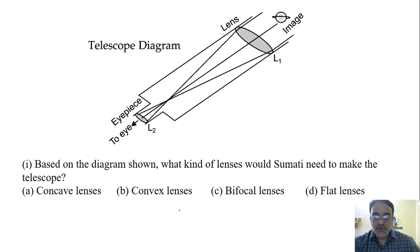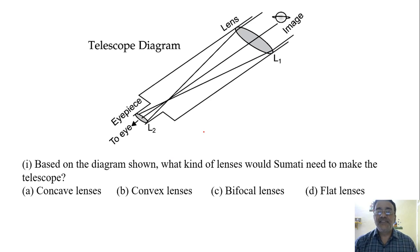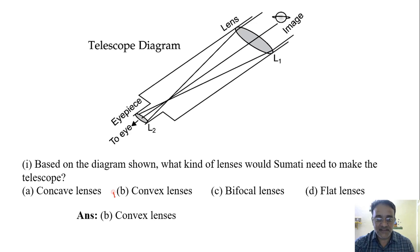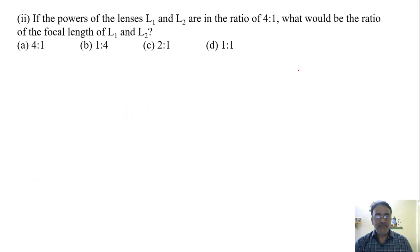Based on the diagram shown, what kind of lenses would Sumati need to make the telescope? From the lens structure shown in the diagram, you can identify that these are convex lenses. A concave lens is shaped outward differently, so from the diagram we can identify them as convex lenses.